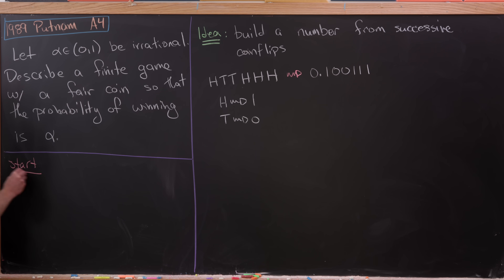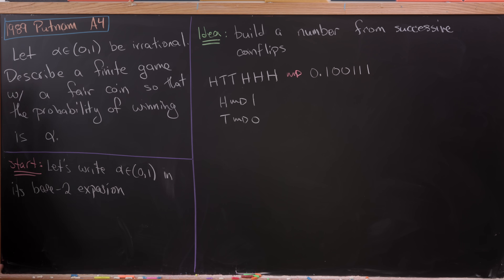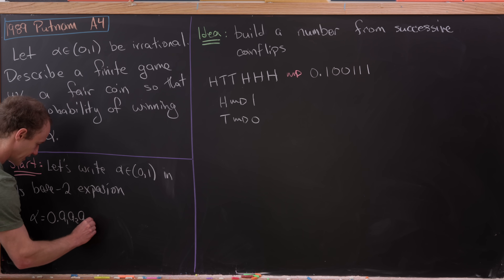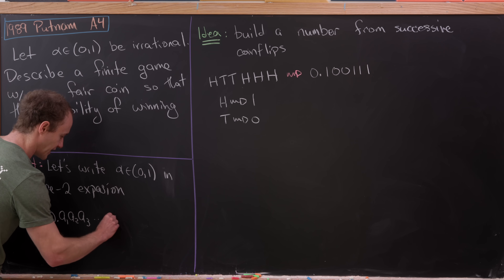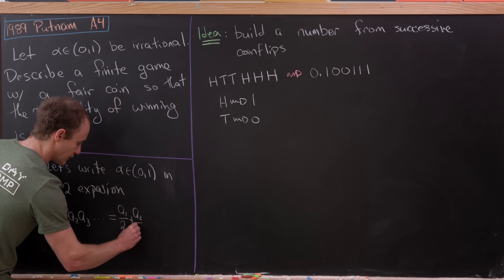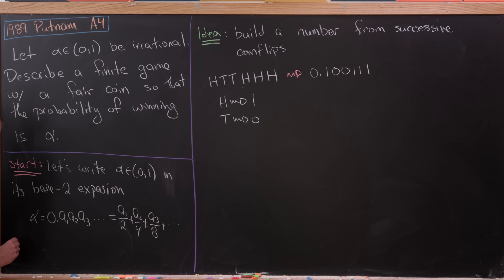This is the start of our solution. Let's write alpha, a number between 0 and 1, in its base 2 expansion: alpha = 0.a1, a2, a3, ... In other words, this is a1 over 2 plus a2 over 4 plus a3 over 8 and so on. All of the a_i's come from the set {0, 1}.